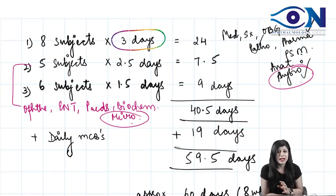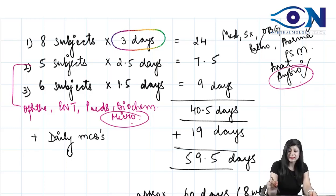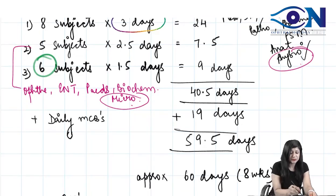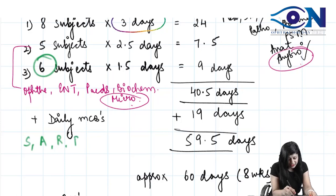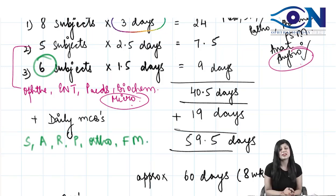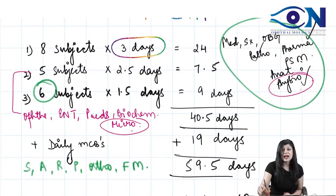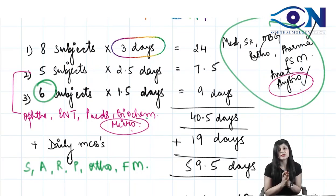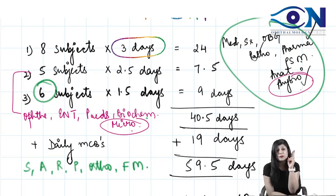Finally, we have six small subjects — Skin, Anesthesia, Radiology, Psychiatry, Orthopedics, and Forensic Medicine. These are very small subjects. So in summary: large subjects get three days, intermediate subjects get 2.5 days, and small subjects get one-and-a-half days each.